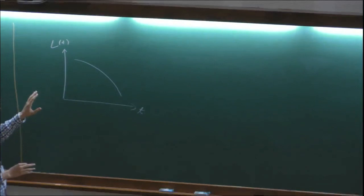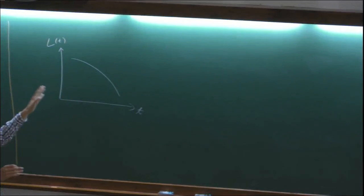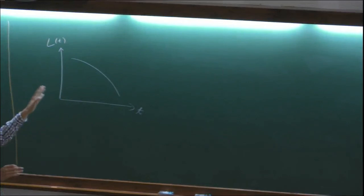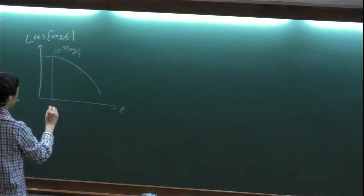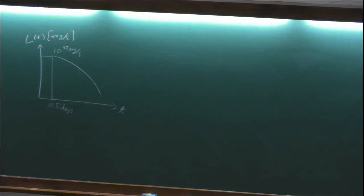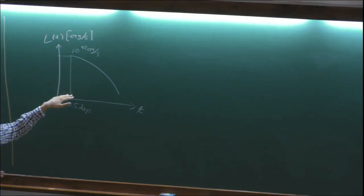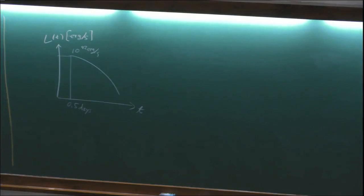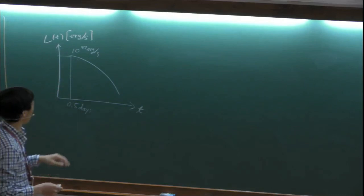This is a light curve — luminosity or flux as a function of time. As we discussed yesterday, the luminosity was about 10^42 erg per second at around 0.5 days. As you did in the tutorial exercise, the initial internal energy from the merger is not sufficient to explain this luminosity — we expect much fainter emission from just the internal energy. So we need some additional energy source to power this observed kilonova.